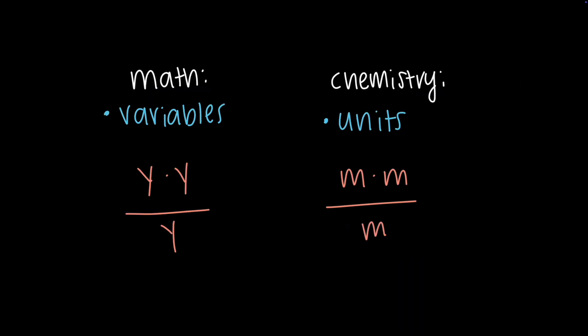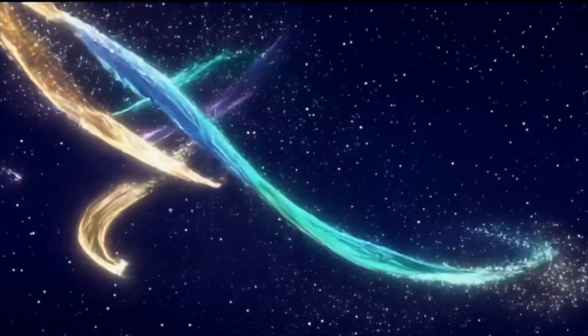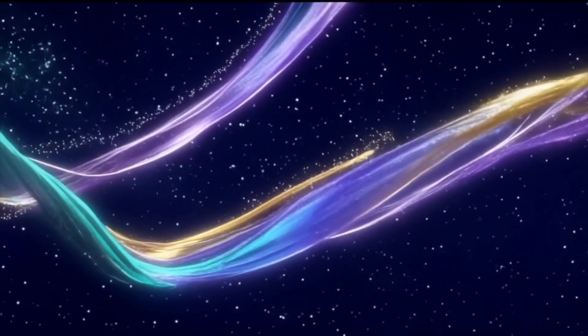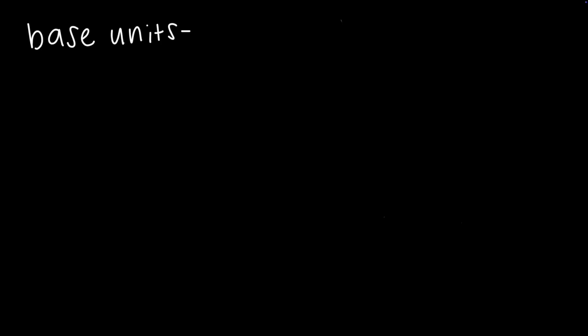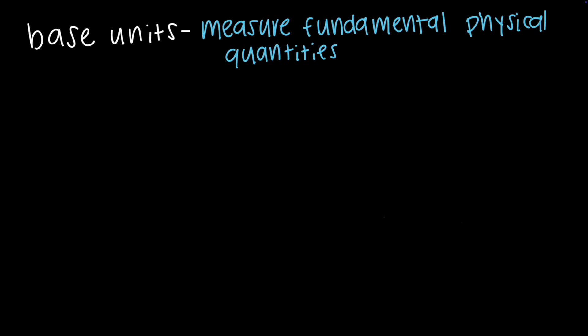When doing dimensional analysis, think of the units like algebraic variables — they follow the same rules. This helps you keep track of what is left in your final answer and ensures the unit matches the quantity you are solving for. To do this effectively, it is important to know the standard or base units for each type of measurement in chemistry. The base units are the fundamental units used to measure basic physical quantities.